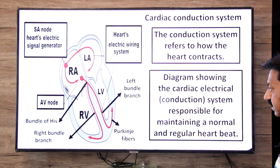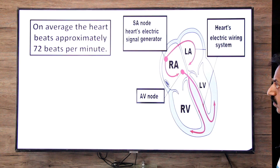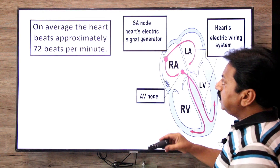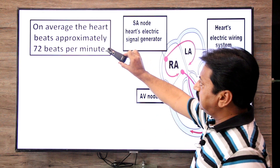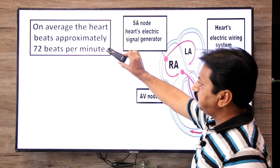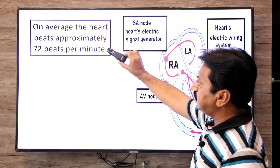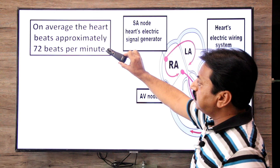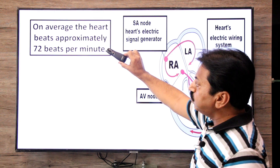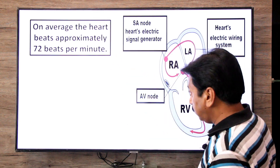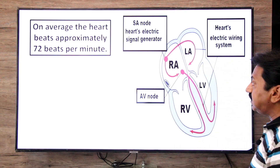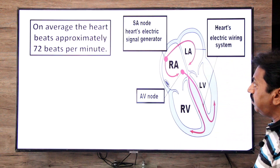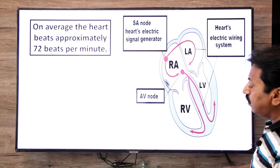On average, the heart beats approximately 72 beats per minute. Impulses are generated within the heart itself, and this is why the heart is said to be myogenic — it generates its own electrical impulses.